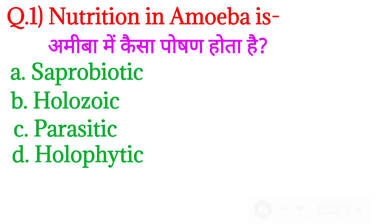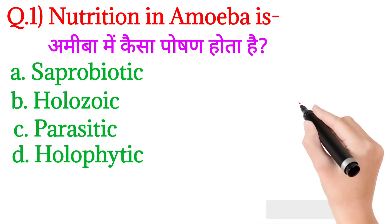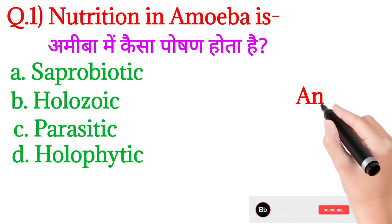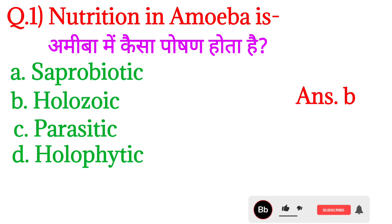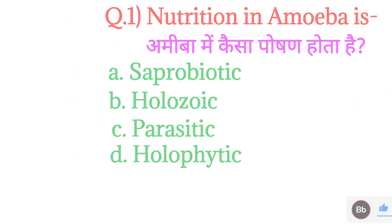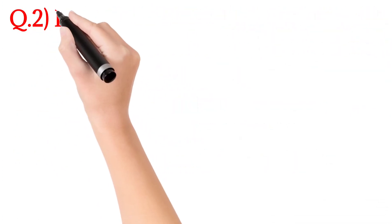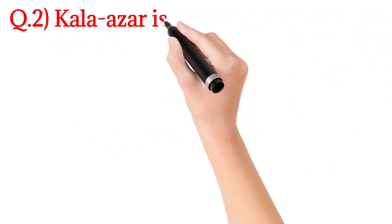Toh chalo iska sahi answer batao, aap log kya hoga? Iska answer hoga option number B: holozoic. Amoeba mein holozoic type ka nutrition paaya jata hai.